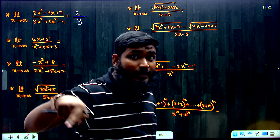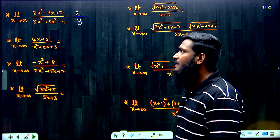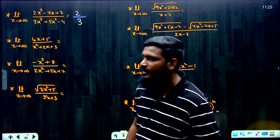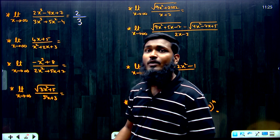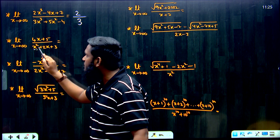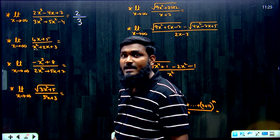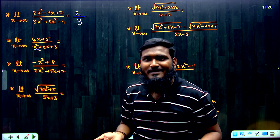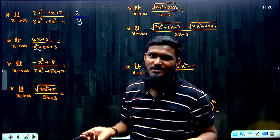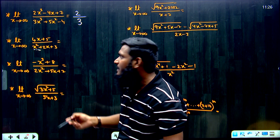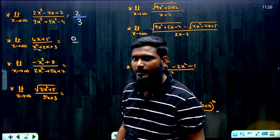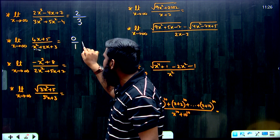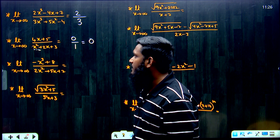Next question: limit x tends to infinity of (4x + 5) divided by (x² + 2x + 3). The highest degree term from the complete question is x². The coefficient of x² in the numerator is 0 (since x² is not present there), divided by 1 in the denominator. So the answer is 0.